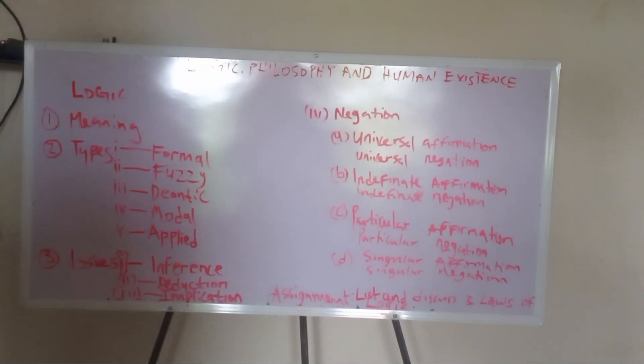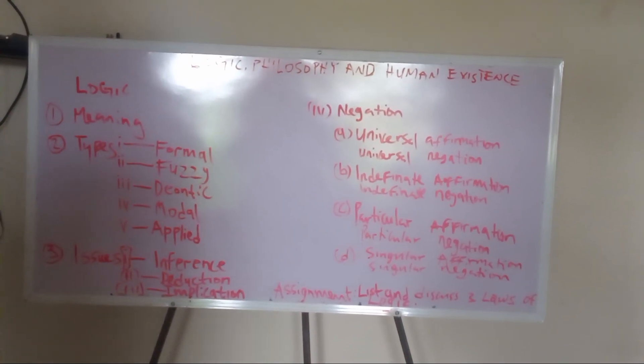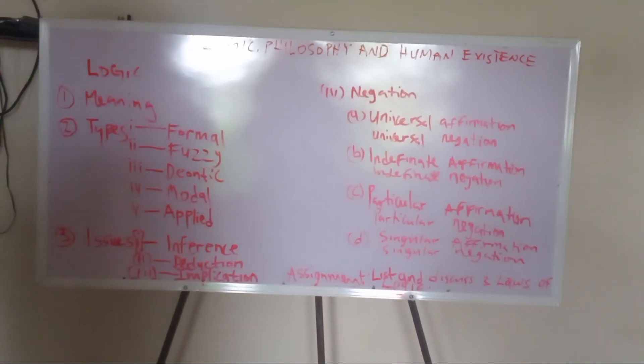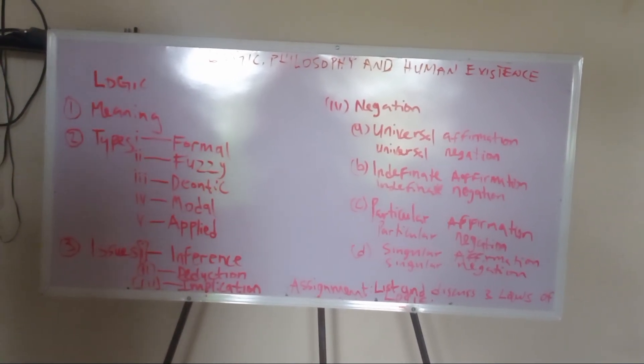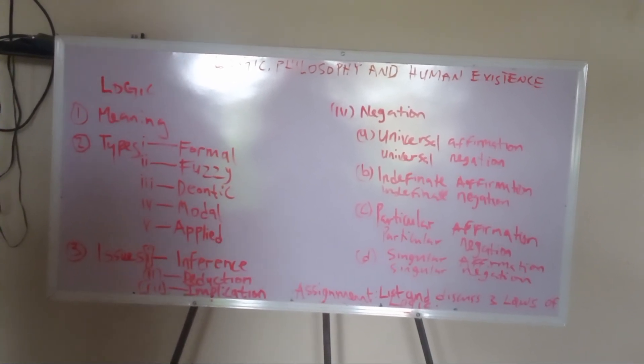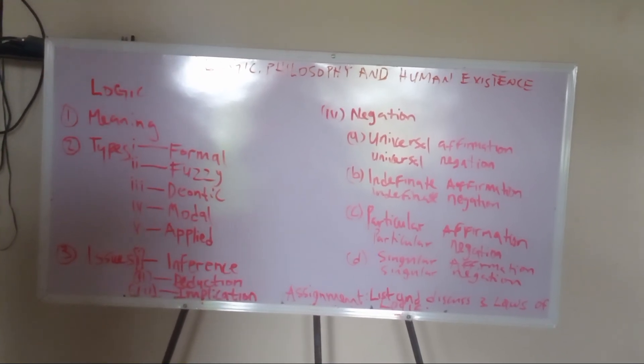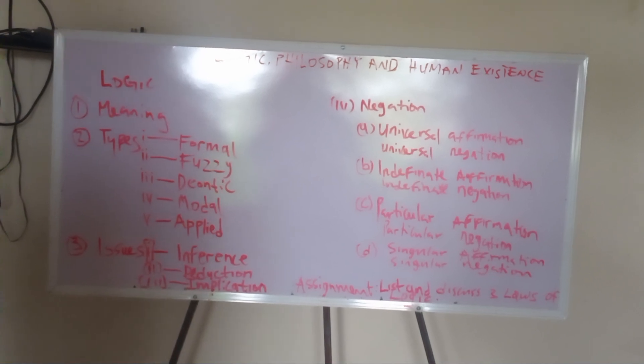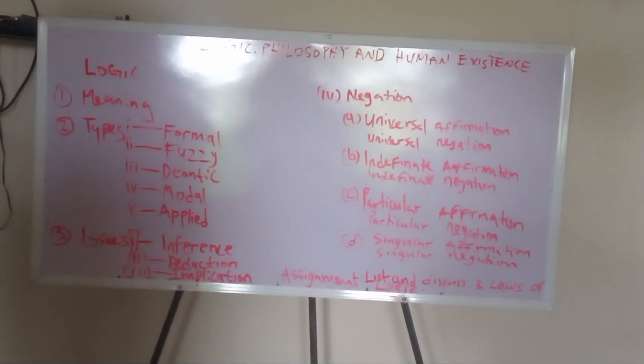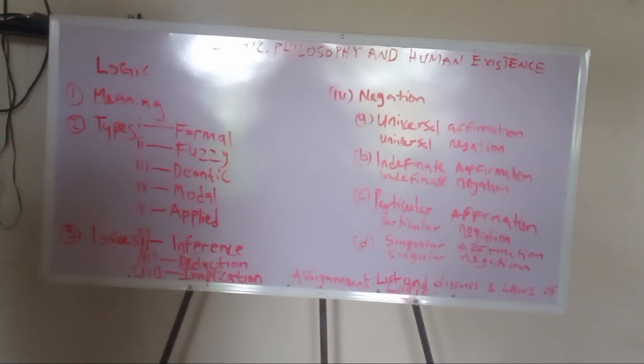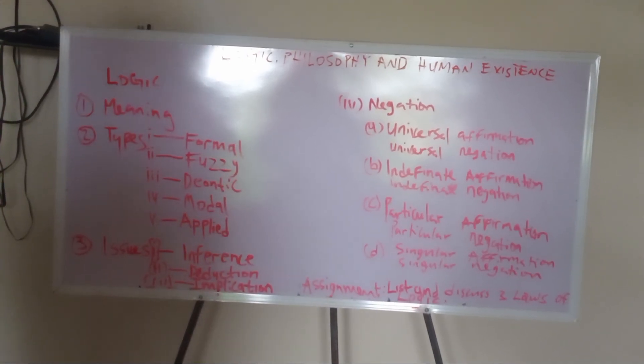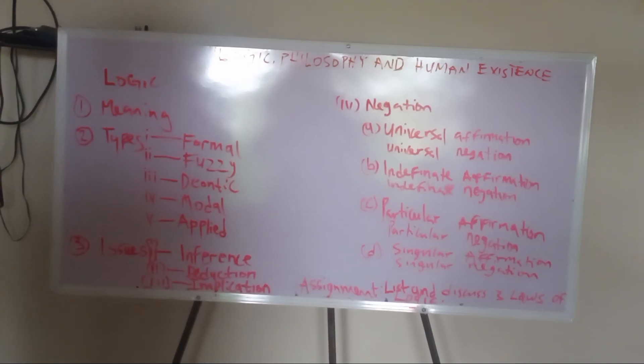Talking about universal, we have universal affirmation. What are we affirming? When we see every, that is talking about the whole world. Every boy is a scholar. That is universal. Once I see any boy outside there, I will say he is a scholar. Every boy is a father in making. Once I see any boy out there, I will say he is a potential father. If I want to use the negation of it, I will say, every boy is not a father. Talking about every bitter is an alpha, then the negation will be what? Every bitter is not an alpha.